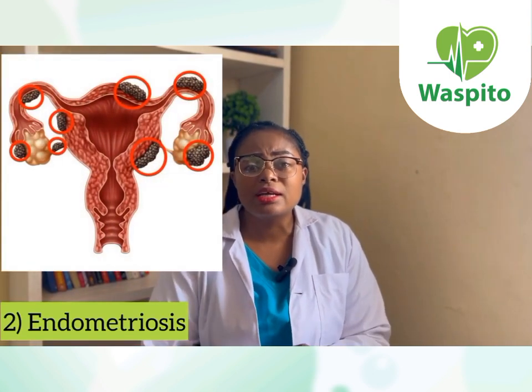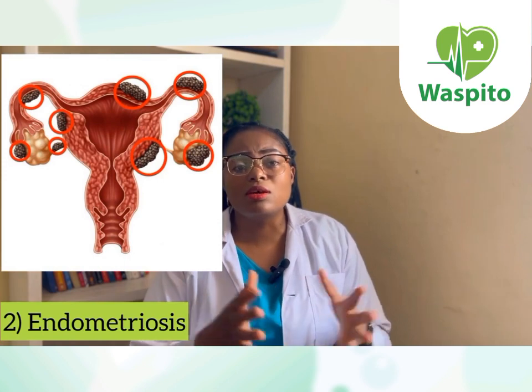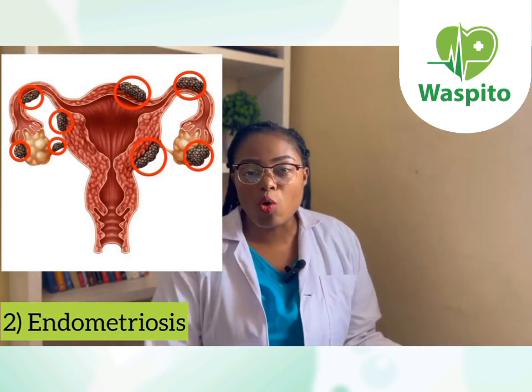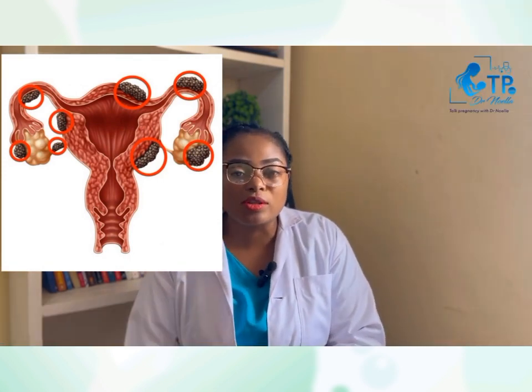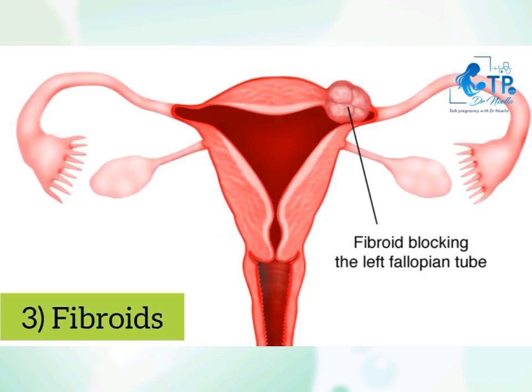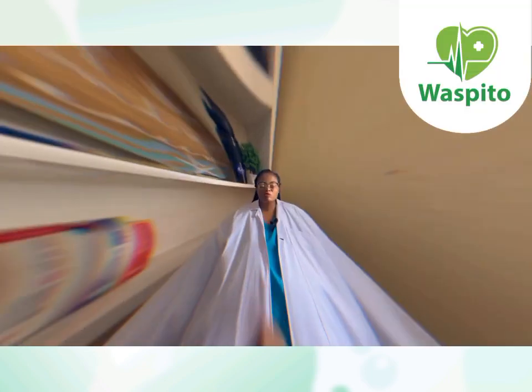There are other causes of blocked tubes, like endometriosis. Endometriosis means there are places in the womb where menstruation occurs when it does not have to occur there. Fibroids can also be at the level of the tubes and block them, preventing the egg from reaching the sperm.